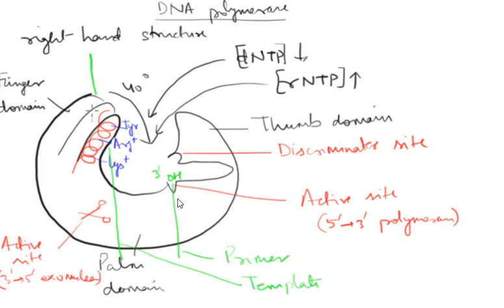Coming to the detailed mechanism of DNA polymerase: within the cytosol of prokaryotes, both deoxyribonucleotides and ribonucleotides are present, but the concentration of ribonucleotides is higher than deoxyribonucleotides. So there are chances that more ribonucleotides enter into the DNA polymerase than deoxyribonucleotides, but the discriminator site within the thumb domain removes ribonucleotides, keeping only deoxyribonucleotides for polymerization. How do these nucleotides reach the active site of DNA polymerase?